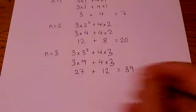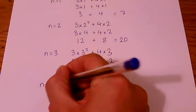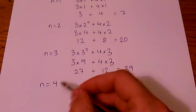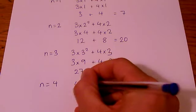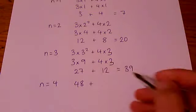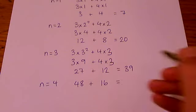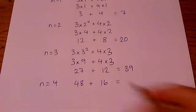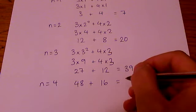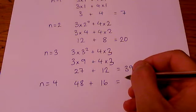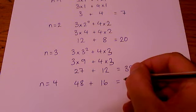If you carry on that working, when n equals 4, you'll get 3 times 16, which is 48. And then you get 4 times 4, which is 16. So that's going to make 48 plus 16, which is 64.